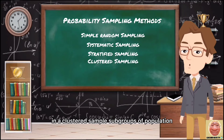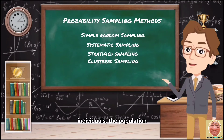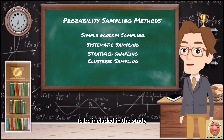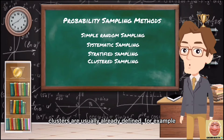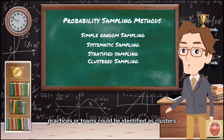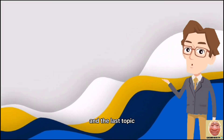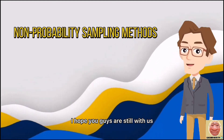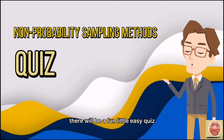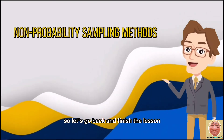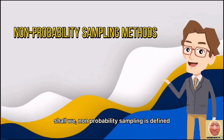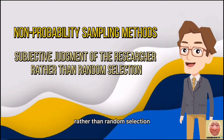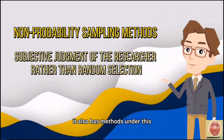Last is clustered sampling. In a clustered sample, subgroups of the population are used as the sampling unit rather than individuals. The population is divided into clusters, which are randomly selected to be included in the study. Clusters are usually already defined — for example, individual GP practices or towns. Non-probability sampling is defined as a sampling technique in which the researcher selects samples based on the subjective judgment of the researcher rather than random selection. Like probability sampling, it also has several methods.